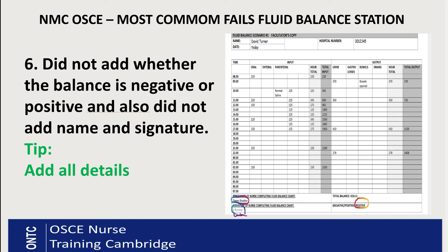The sixth common fail is not adding whether the balance is negative or positive. Your fluid balance chart requires you to state in words whether the balance is positive or negative. If input is more than output, the balance is positive; if output is more than input, the balance is negative. You cannot just write a plus or minus sign — you must write the words 'positive' or 'negative' as shown on the chart. Writing just a symbol is a critical fail.